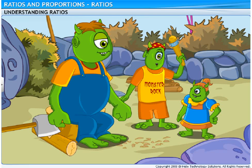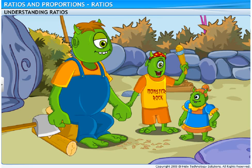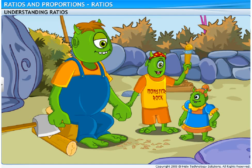Aha! Now do you know my actual strength, Hefty? In the same way, to compare the weights, we divide 450 by 150. We get 3 upon 1. So, the ratio of our weights is 3 is to 1. Or more importantly, I am 3 times heavier than you are.